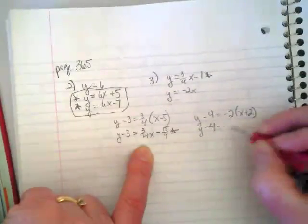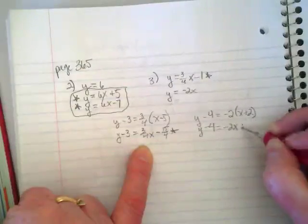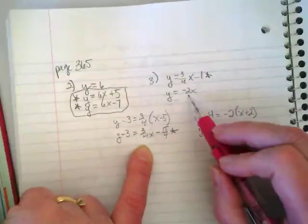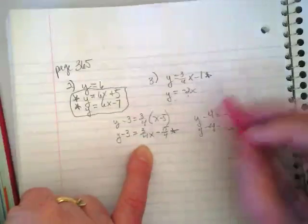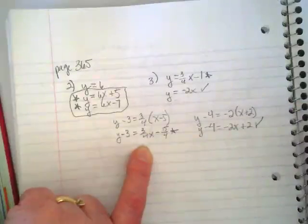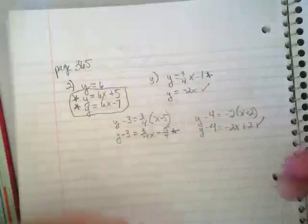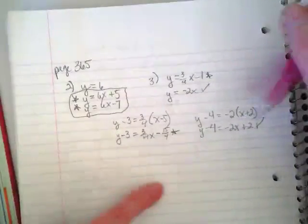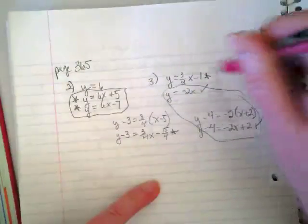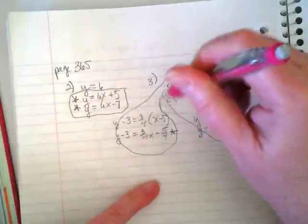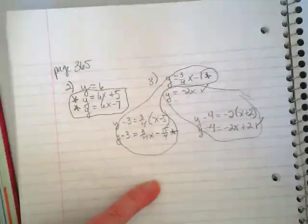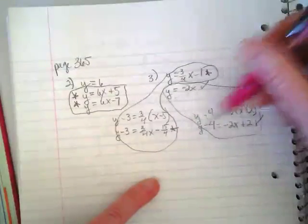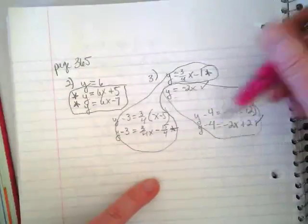And then there's another equation there that says Y minus four equals negative two X plus two. This one has a negative two X and so does this one. So, these two are parallel with each other. You can just use some form of notation to show which ones match. This one has two sets of parallels, but they're different from each other. These two go together, and these two go together.